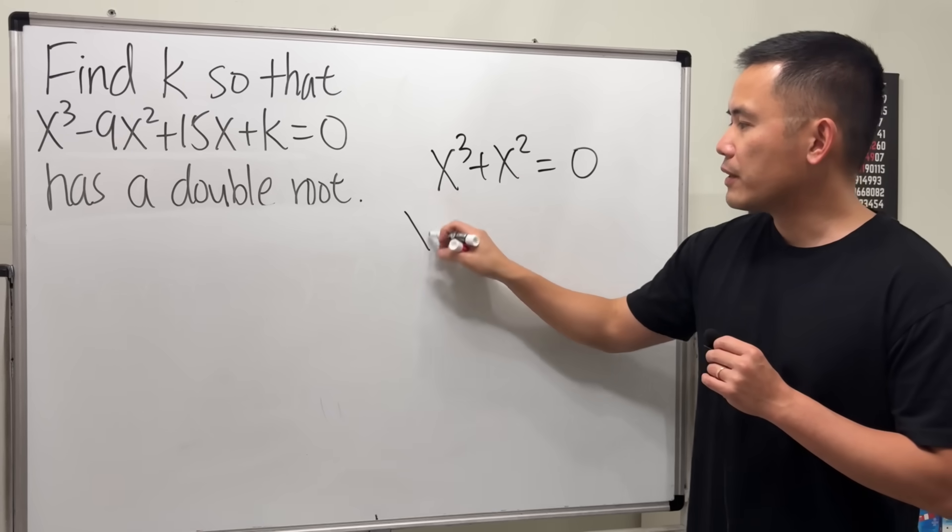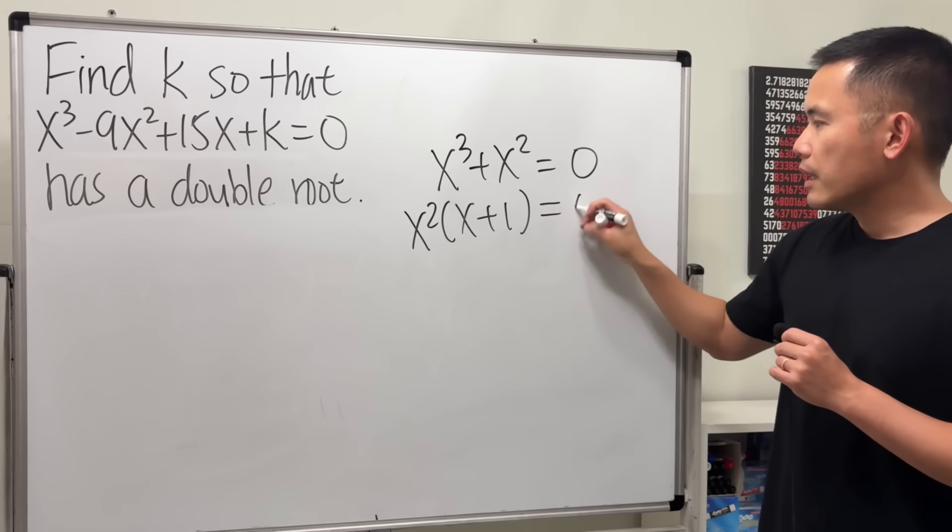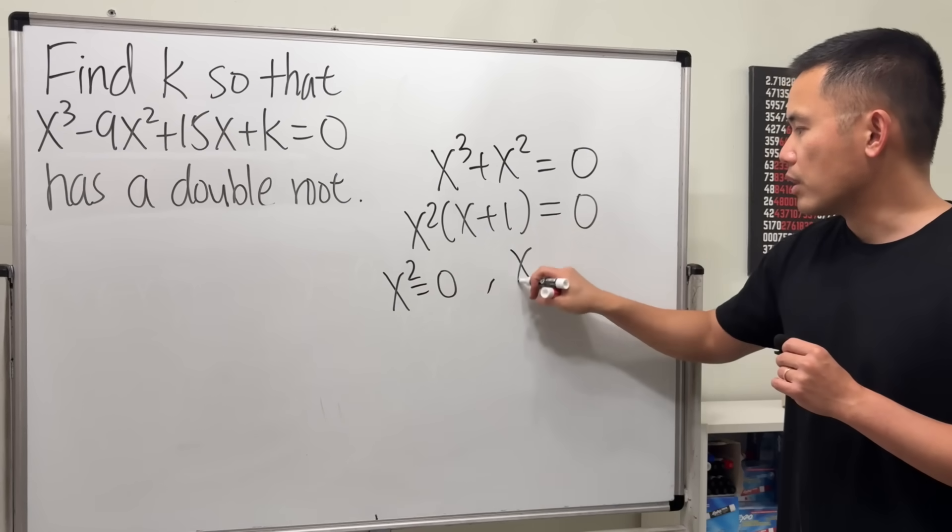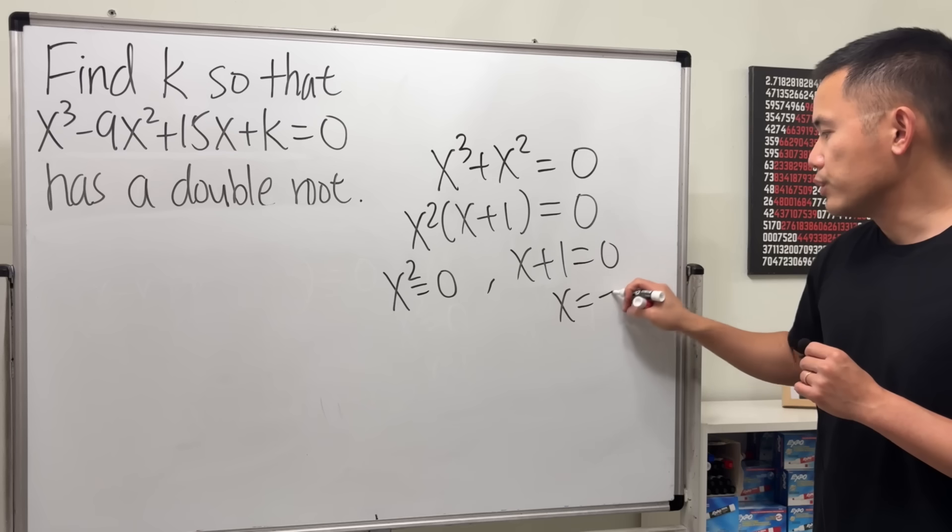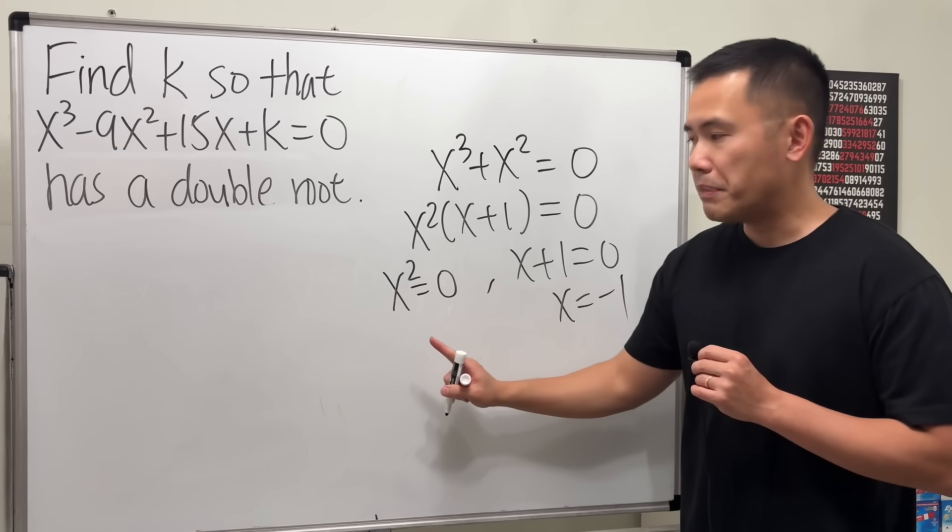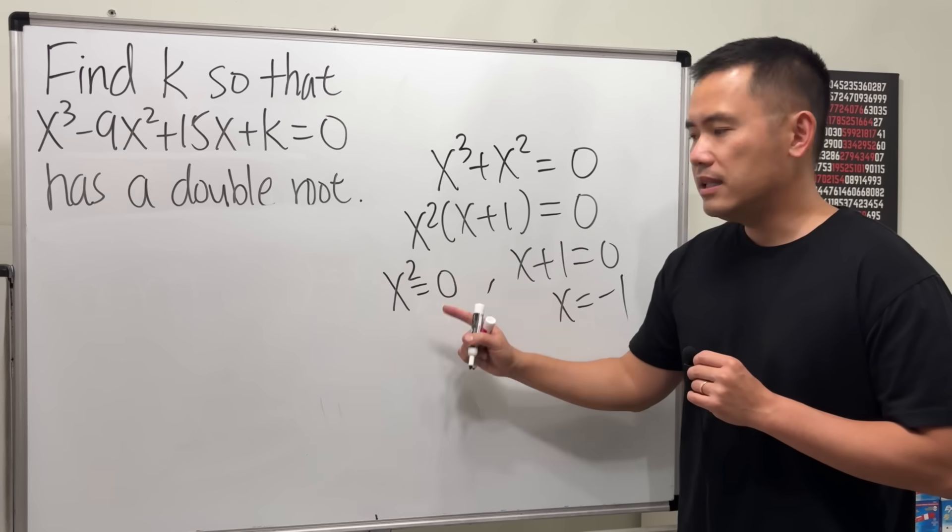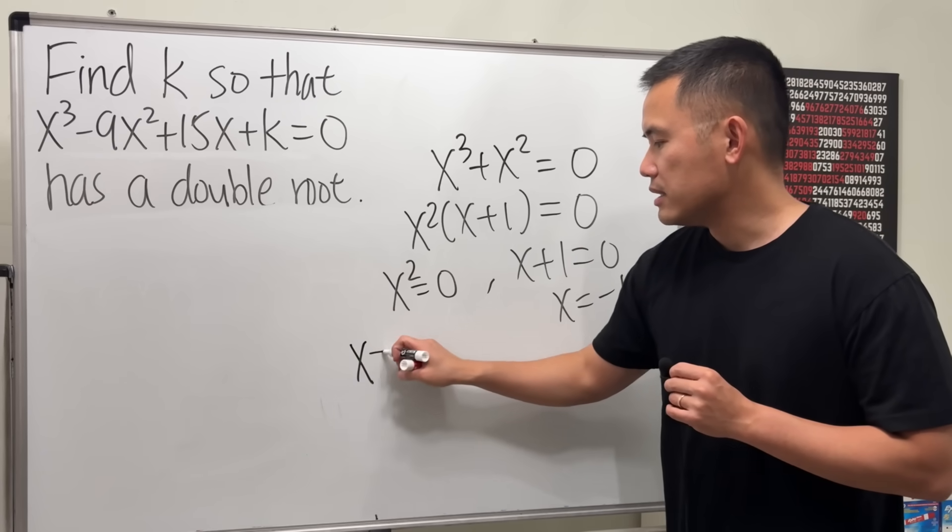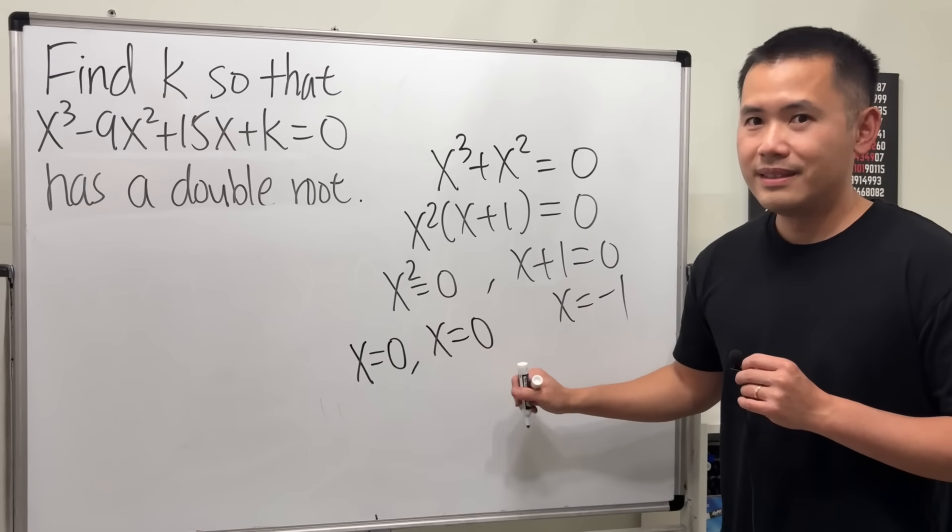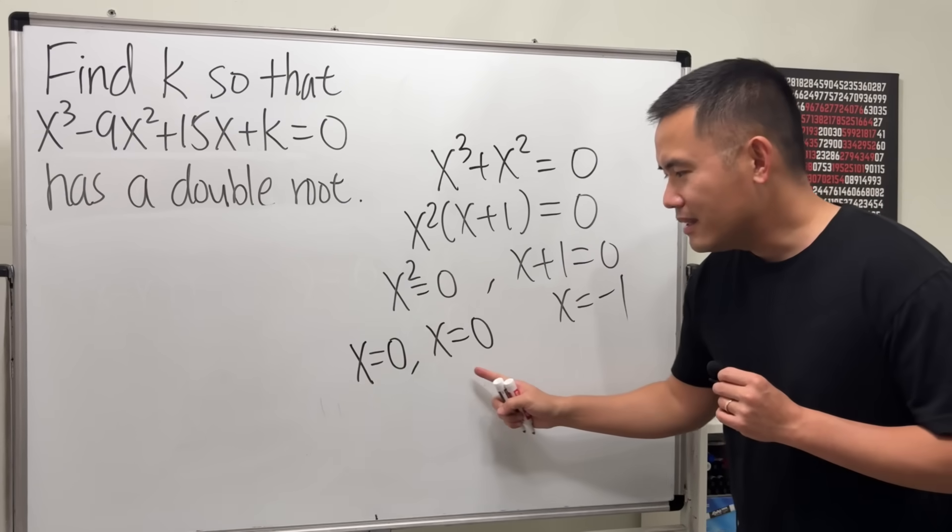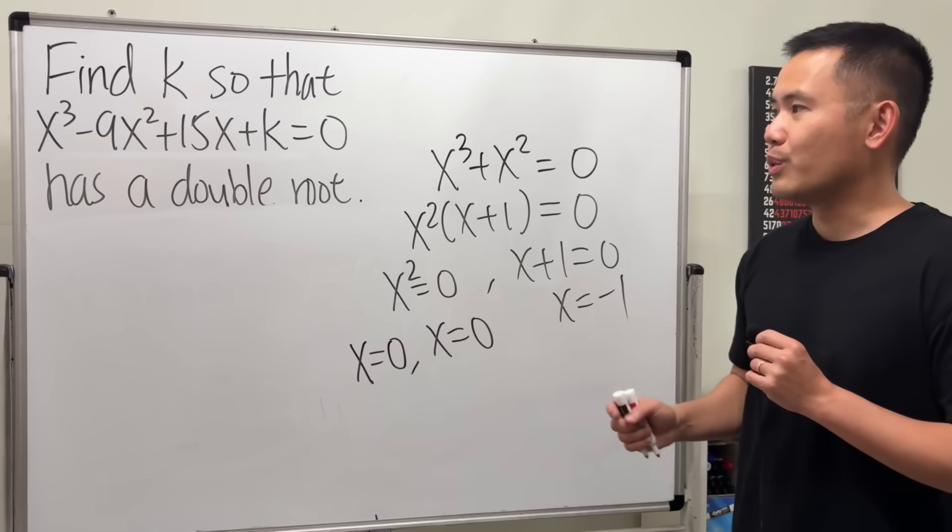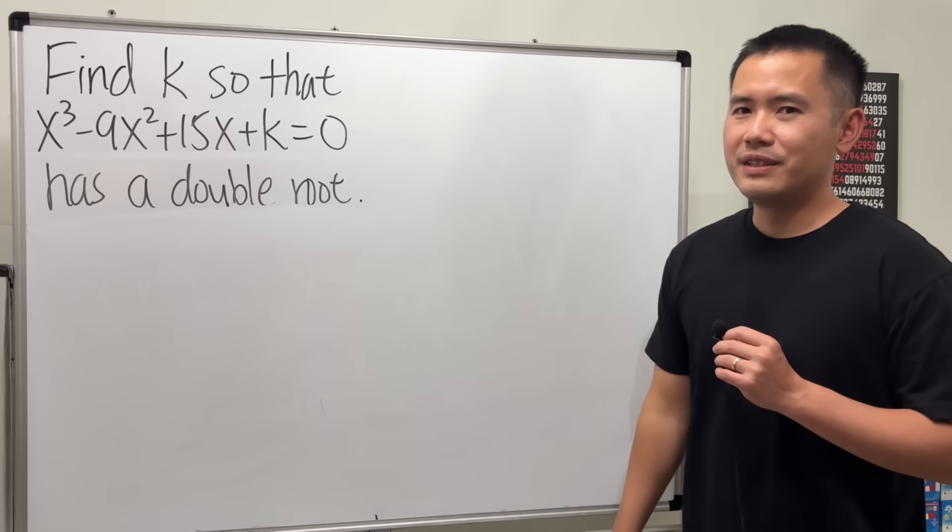For example, if we have x³ + x² = 0, we can solve this by first factoring out the x² and then we can put this equal to zero, and then put that equal to zero. Right here x is just equal to negative one. Right here we get x is equal to zero, but this is x to the second power. Technically we have to say x is equal to zero twice, but you can just write down zero one time. But it does happen twice—that's why this is a double root to this equation.